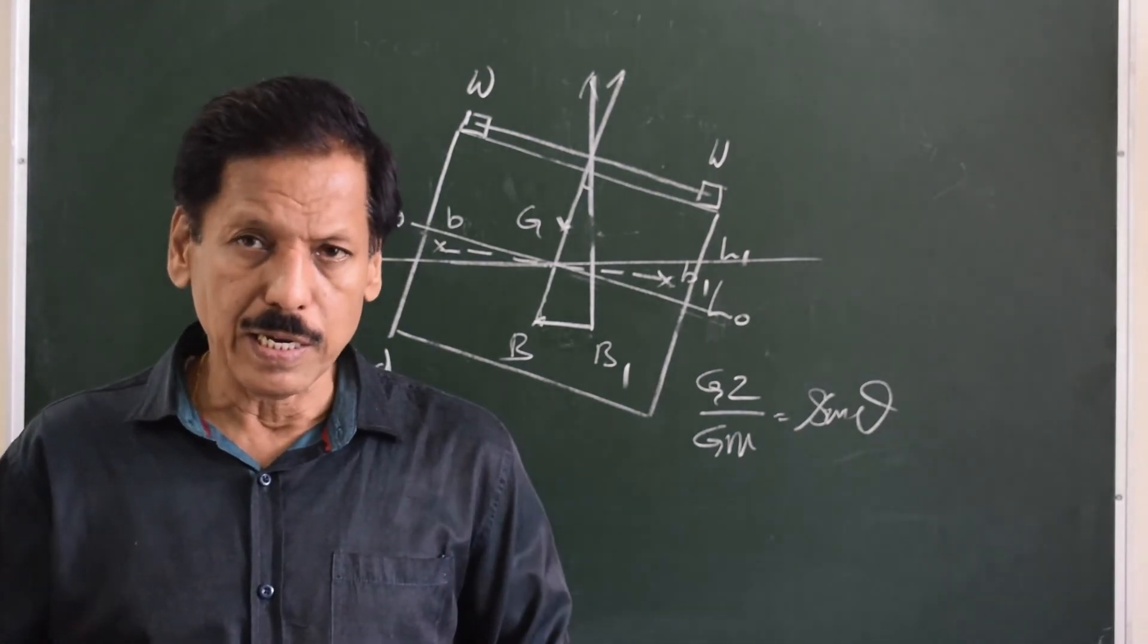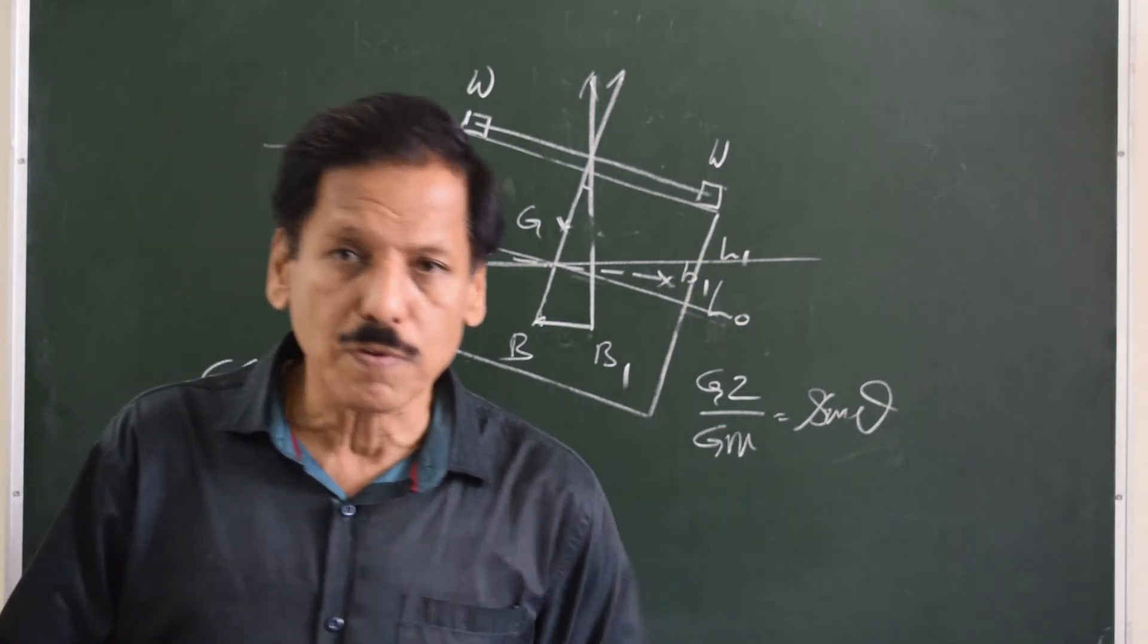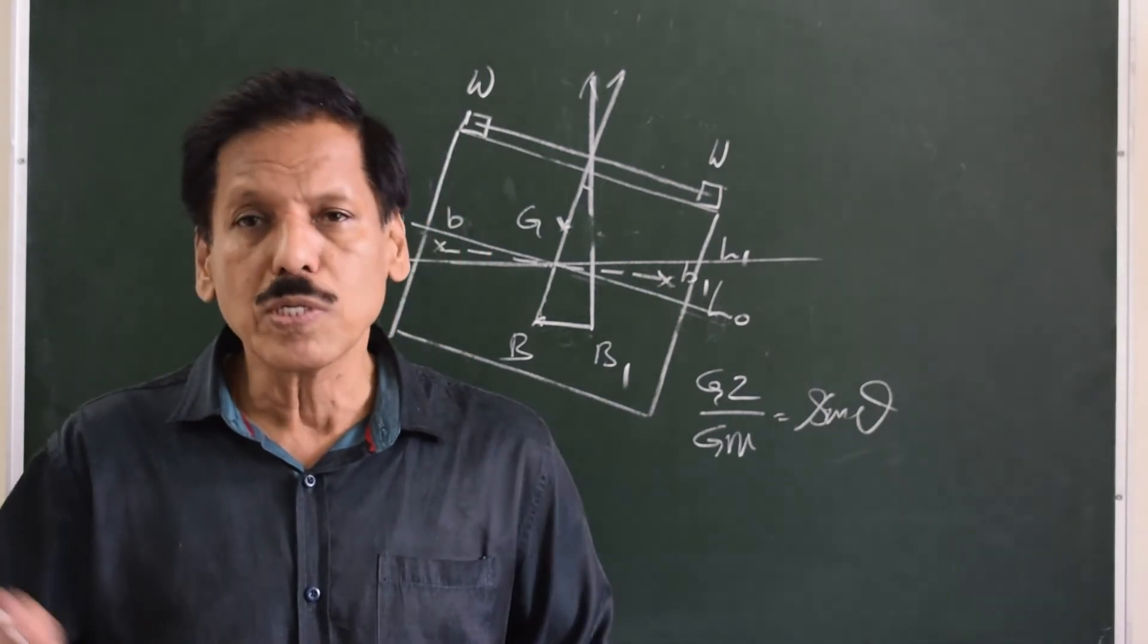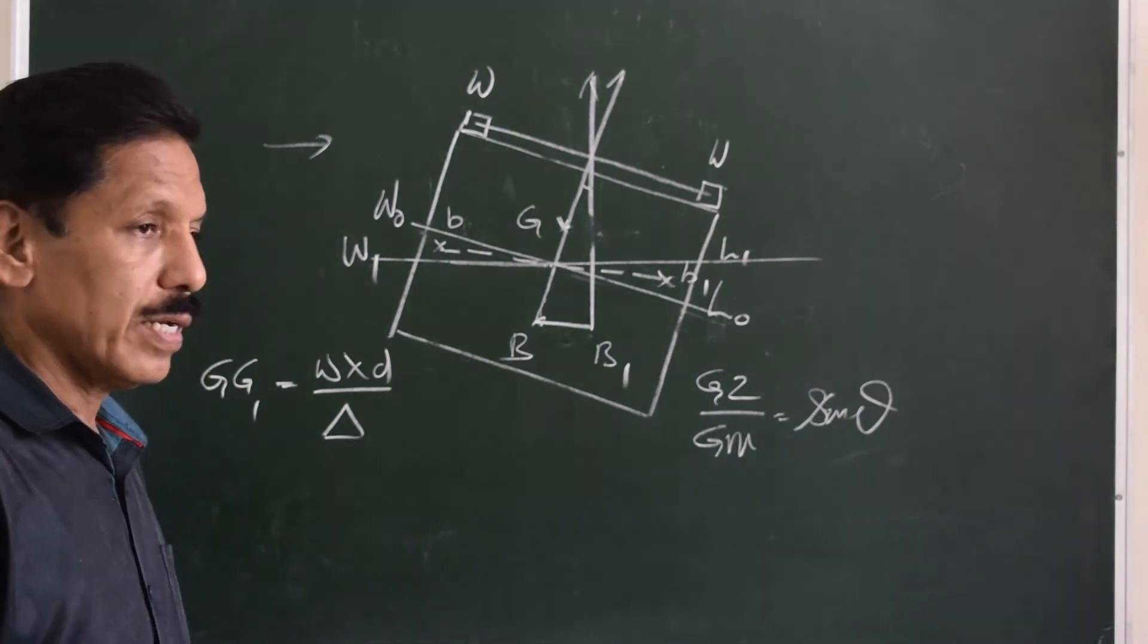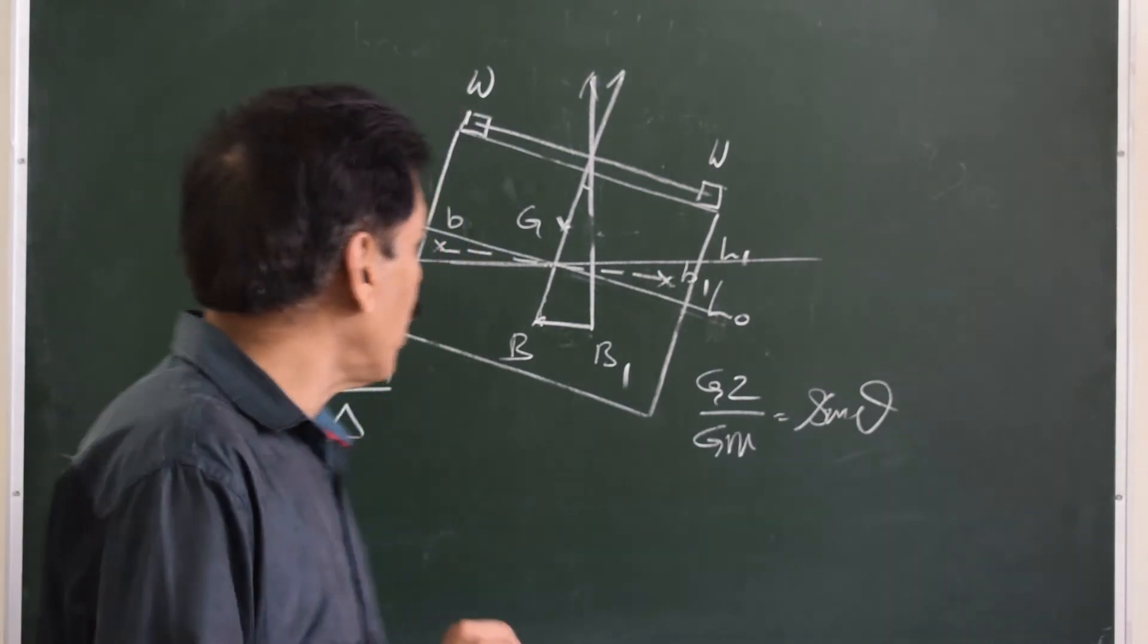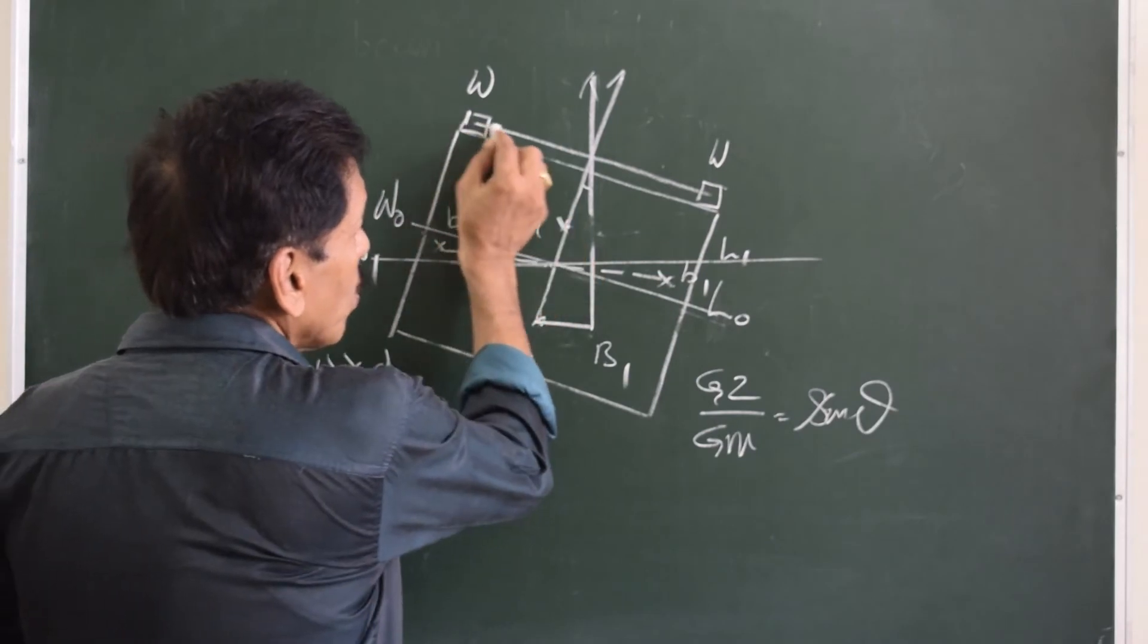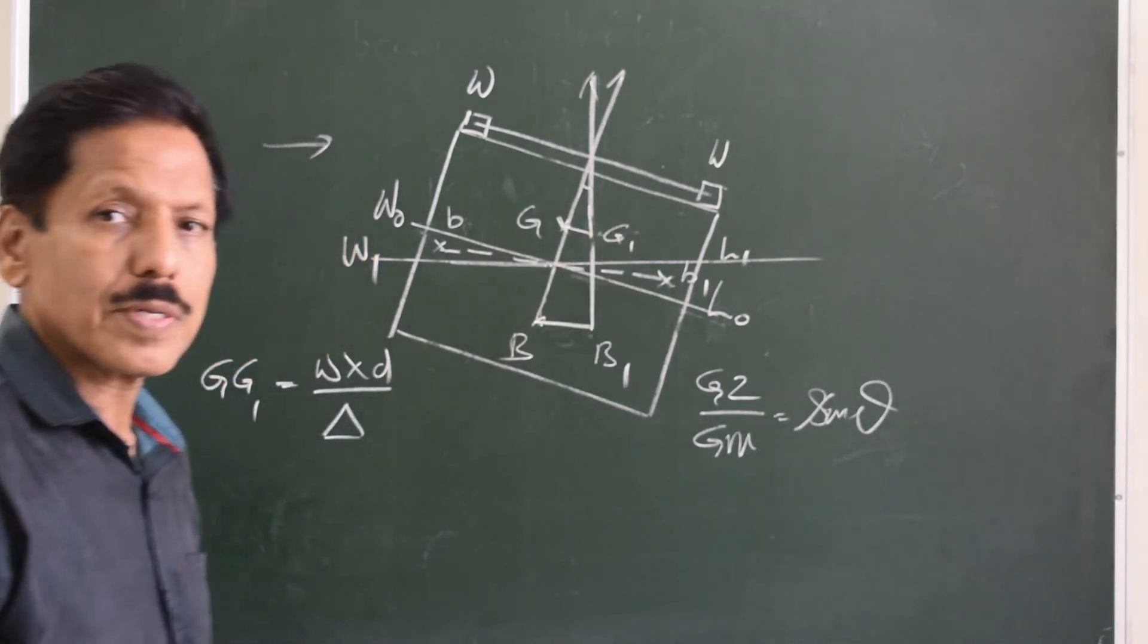What is the difference between heel and list? Heel is caused by external disturbance, whereas list is because of internal distribution of the weights. Heel is a situation of non-equilibrium. In heeled situation, ship loses the equilibrium. Equilibrium is lost because the G and B are not in a vertical line, whereas listed ship is a situation of equilibrium. Equilibrium means G and B have to be in one vertical line. Now I was talking about correct drawing. G will shift parallel to the shift of weight, but it will shift only till the point it is vertically above B.